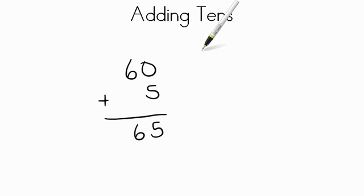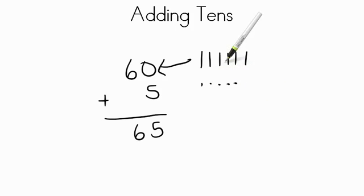It's the same as if I was using ten sticks, one, two, three, four, five, six ten sticks. That's the same as this number right here, sixty. And I'm going to add five ones, and I'm just going to pick one, two, three, four, five ones. If we counted that up, ten, twenty, thirty, forty, fifty, sixty, sixty-one, sixty-two, sixty-three, sixty-four, sixty-five.